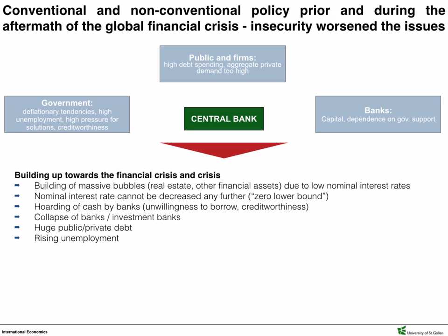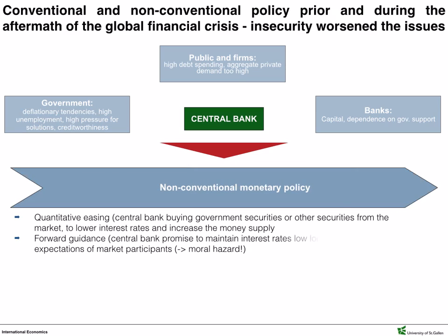Huge public deficit and moral hazard are just two of the very obvious consequences. Clearly, unconventional times require unconventional measures, such as quantitative easing, where the central bank buys securities directly from the market, aiming at lowering interest rates and increasing the money supply. One cannot overstate that for any economy, and especially during rough times, expectations are very important. Forward guidance — the promise from the central bank to maintain low interest rates longer — has been used in order to create a more positive or at least a more stable outlook.